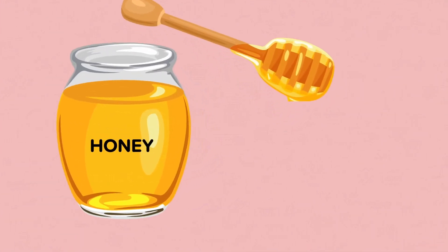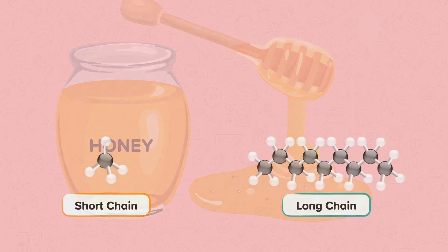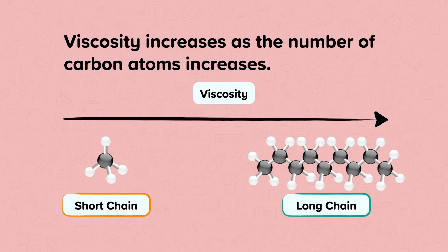Viscosity refers to how easily a substance flows. High viscosity liquids such as honey are thick and flow less easily. Viscosity increases as the number of carbon atoms increases. This is also due to the increased intermolecular forces with long chain hydrocarbons. In addition, the likelihood of the chains of nearby molecules becoming entangled with other molecules is higher with hydrocarbons with longer chains. Given that the viscosity of a liquid is related to the ease with which molecules can move, hydrocarbons with longer chains do not flow as easily.